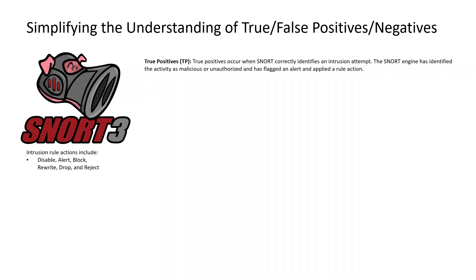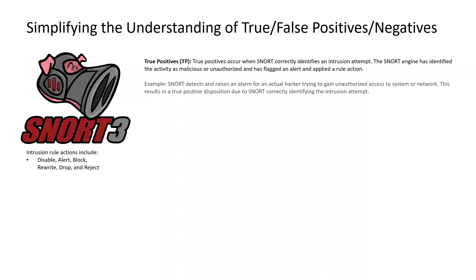From the lens of Snort, true positives occur when Snort correctly identifies an intrusion event. The Snort engine identifies the activity as malicious or unauthorized, flags an alert, and applies a rule action. Rule actions include: alert, block, rewrite, drop, and reject.